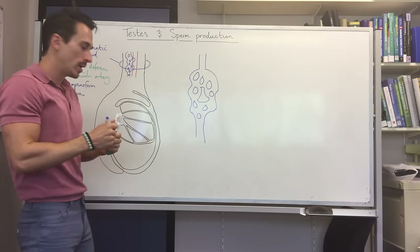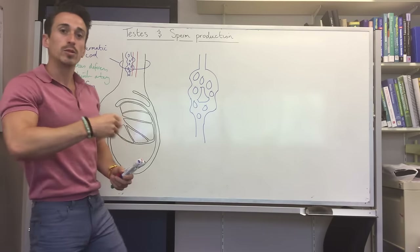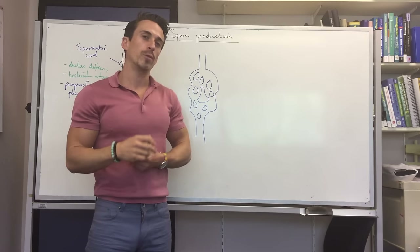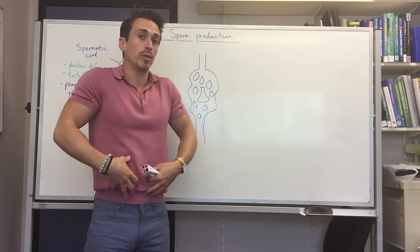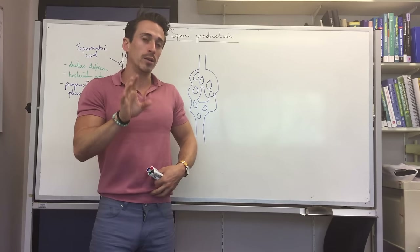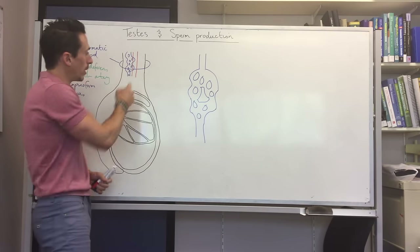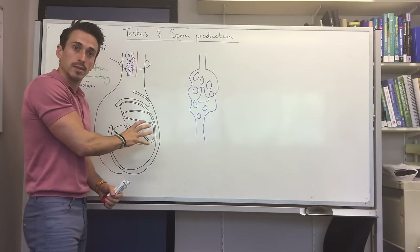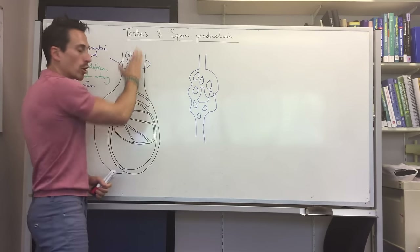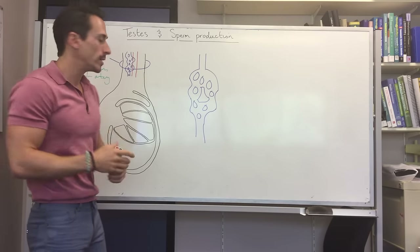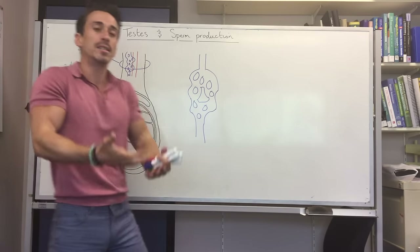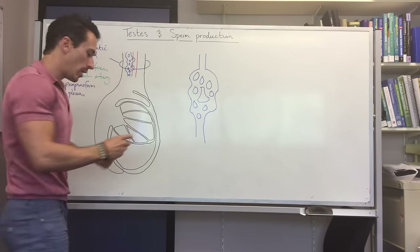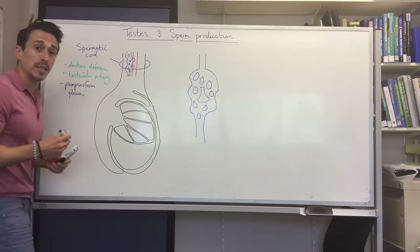The reason we have the pampiniform plexus is that this venous supply cools the arterial blood coming down. For sperm production, the ideal temperature is around two to three degrees lower than internal body temperature. The incoming blood is too warm, so the venous supply cools it down. This is another reason why the testes are found exterior to the body.